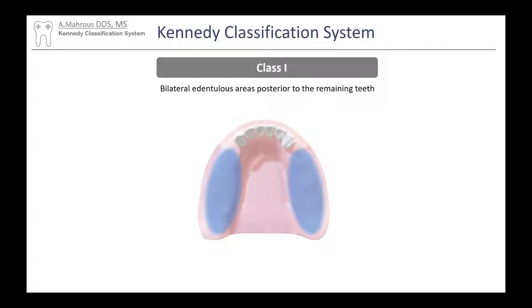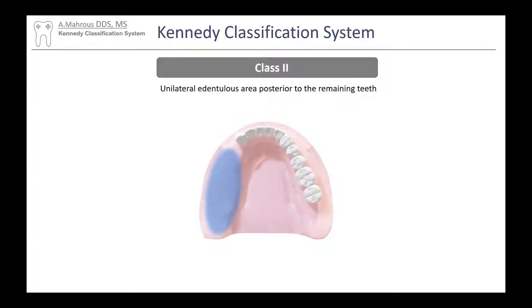Class 1 has two edentulous areas posterior to the remaining teeth and they are unbounded — no teeth in the back, only teeth in the front. Class 2 has only a unilateral area with no teeth in the back, so only one side, left or right, has no teeth in the back and only teeth in the front.